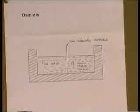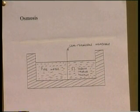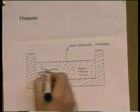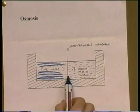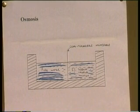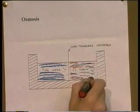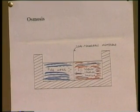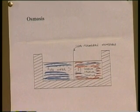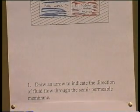We now look at a diagram illustrating this same process in a theoretical environment. On one side of the container we have pure water, with a semipermeable membrane down the middle, and on the other side pure water mixed with 5% sodium chloride. Let's illustrate osmosis by answering the questions and drawing an arrow to indicate the direction of movement.